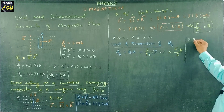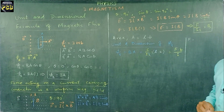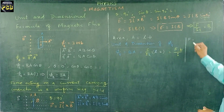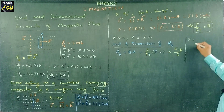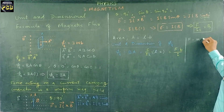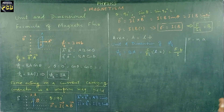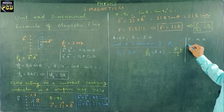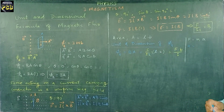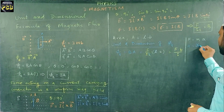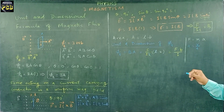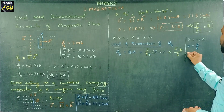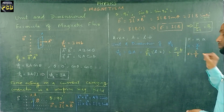Force is explained by Newton's second law. According to that, force is the product of mass and acceleration. Acceleration is velocity divided by time, and velocity is displacement divided by time.